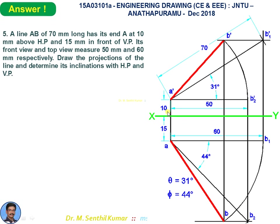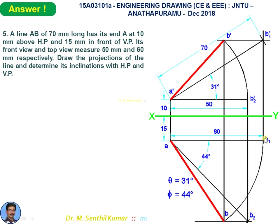After drawing XY, mark end A' at 10 above XY and A at 15 below XY. Use the front view and top view lengths to complete the preliminary front view set and preliminary top view set. In the preliminary front view set, it must show the true length and true angle theta, while it shows the top view length of 60 mm.